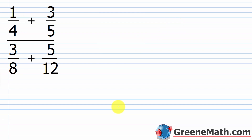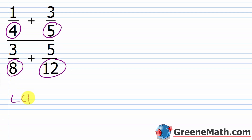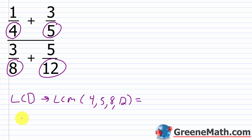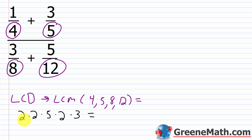Here's a more complicated example: 1/4 plus 3/5 over 3/8 plus 5/12. Look at all denominators: 4, 5, 8, and 12. The LCD is the LCM of 4, 5, 8, and 12. In the prime factorization: 4 is 2×2; 5 is prime; 8 is three factors of 2, so we add one more factor of 2; 12 is 2×2×3, so we add a factor of 3. Multiplying out: 2×2×5×2×3 = 120. So the LCD is 120.